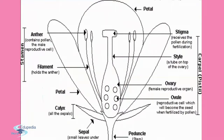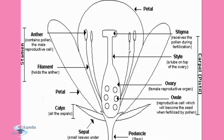In this typical representation: the petal is the colored part, the stigma receives pollen during fertilization, the style is a tube on top of the ovary, and the ovary is the female reproductive organ. The ovules are reproductive cells that become seeds when fertilized by pollen. The anther is the male reproductive part that produces pollen, and the filament holds the anther. The calyx parts are leaf-like, and many calyx together form the sepals — the small leaf-like structures under the flower. The peduncle is the stem that holds the entire part of the flower.